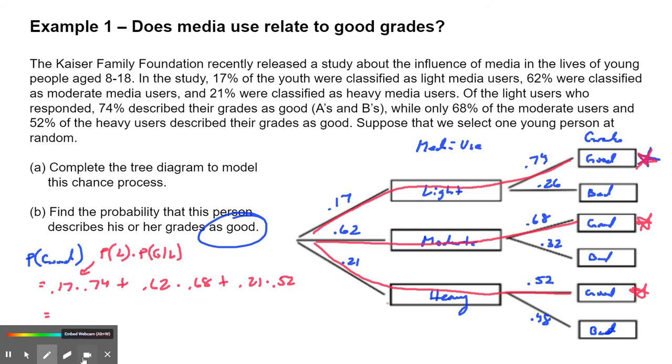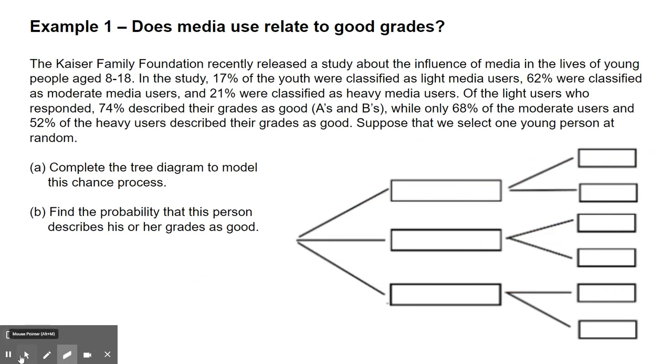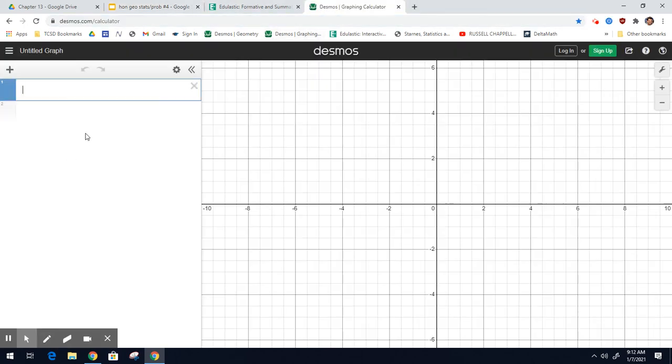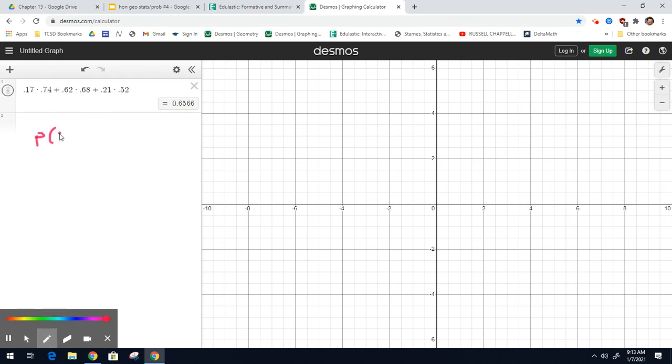So I'm going to go to the graphing calculator. We're going to round these to maybe two or three or four decimals, probably three decimals, unless it ends nicely. So I'll go to the graphing calculator. I took a picture of it. So we're doing 0.17 times 0.74 plus 0.62 times 0.68 plus 0.21 times 0.52. And there we go. And that would be the answer for having the good grades. So the probability of having good grades would equal 0.6566. And we'd write that down. Do not round because you don't need to. And that's the answer.